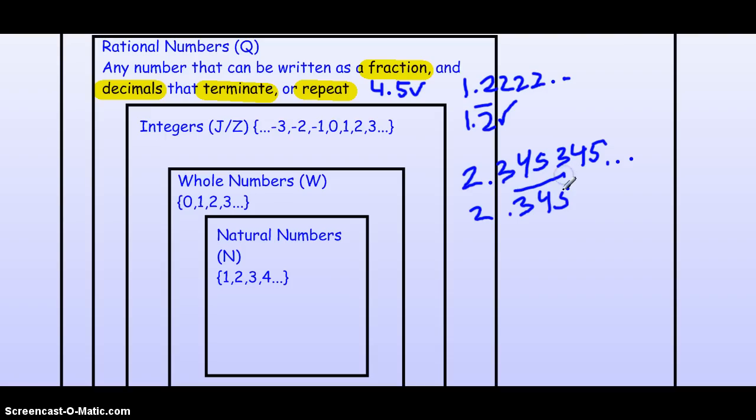And even though it's three numbers, 345345345, because it's repeating those three numbers, that would be rational as well.